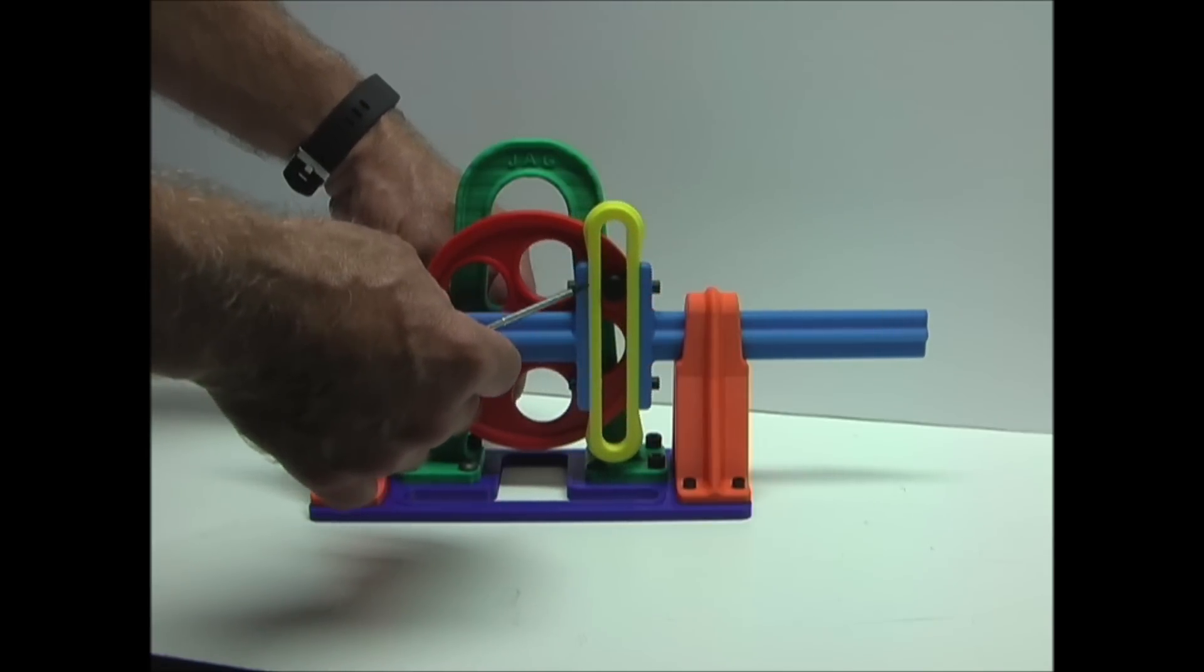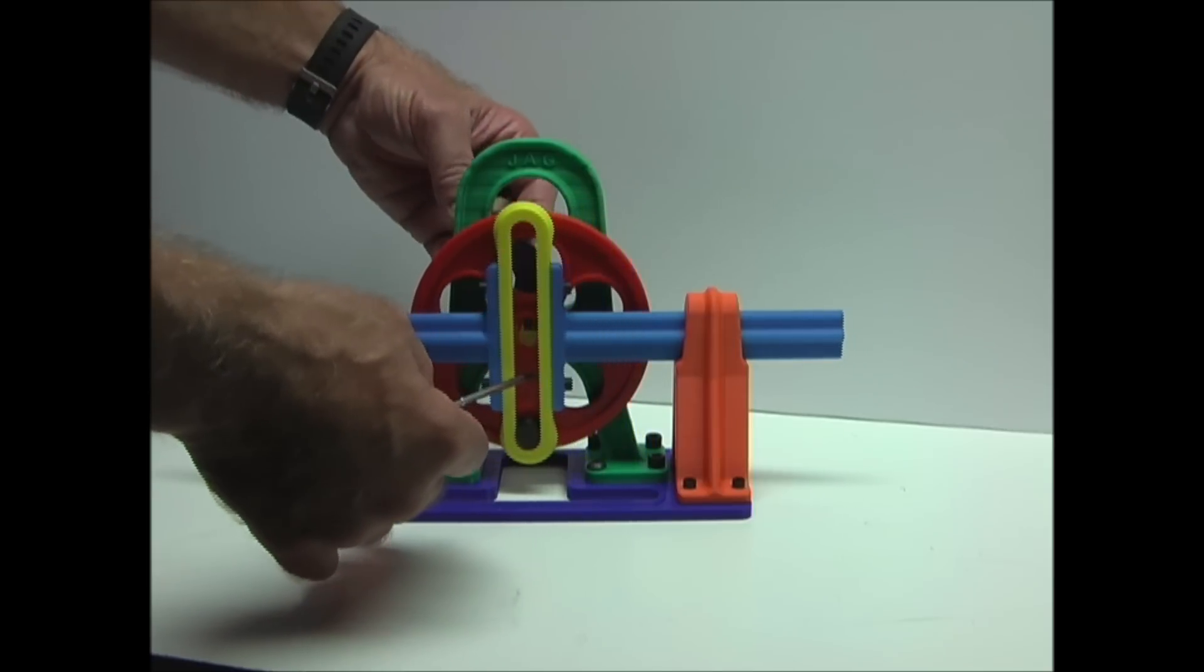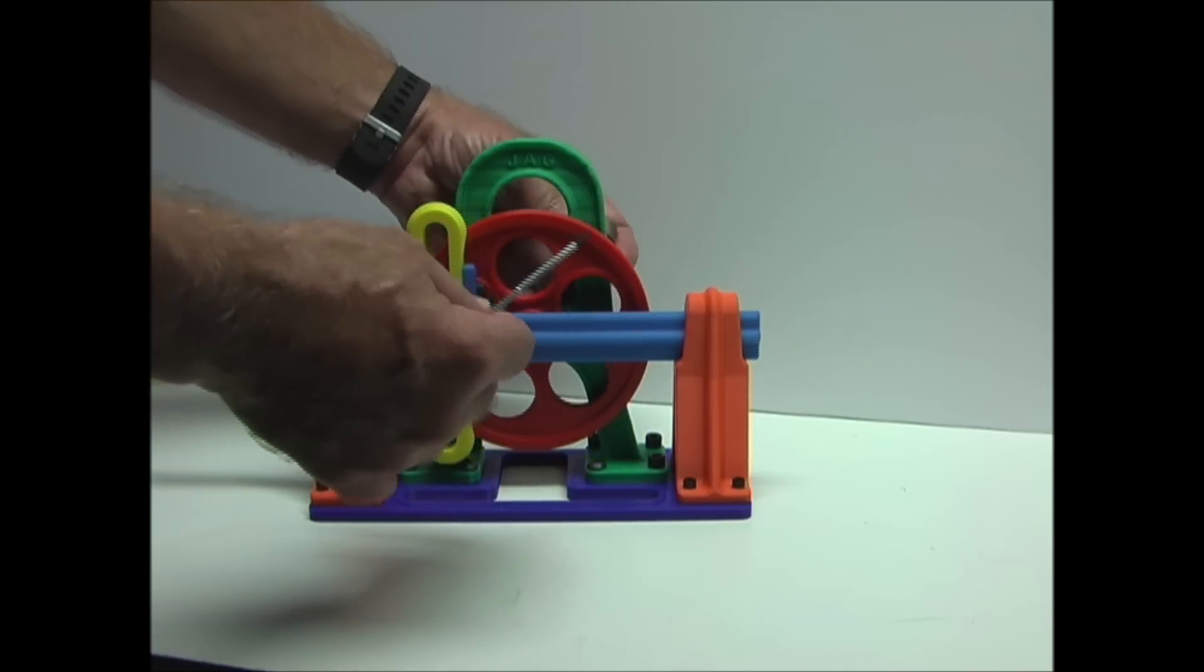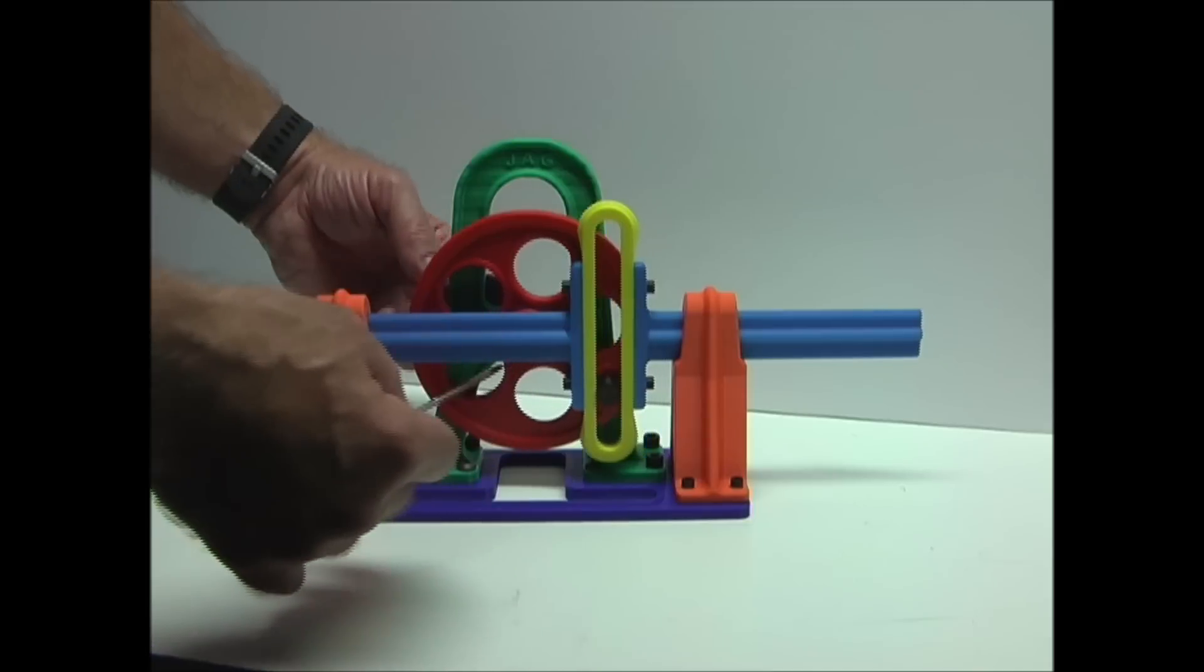As the wheel is rotated, the pin moves through the slider, moving it back and forth, converting this rotary motion to reciprocating linear motion.